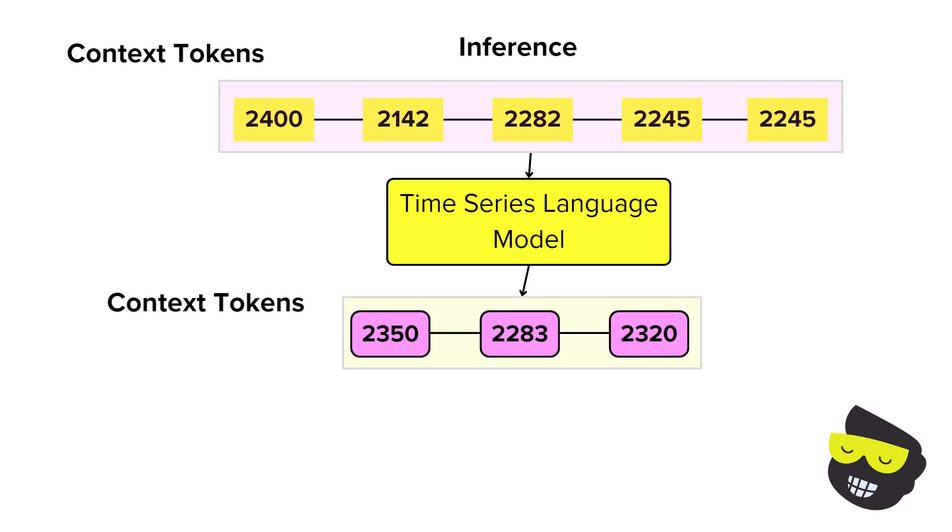We have then the context tokens, which are absolutely key. They represent the historical data transformed into the quantized values. The trained model uses them to generate new tokens that predict future values.